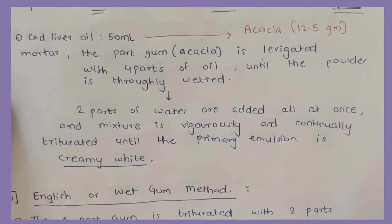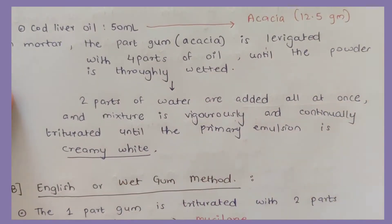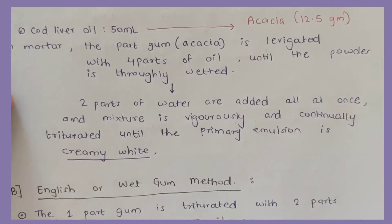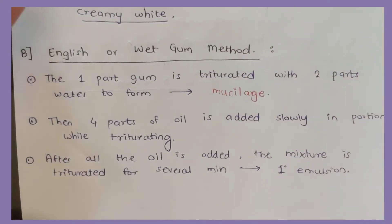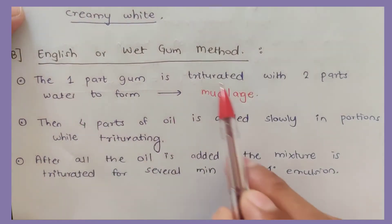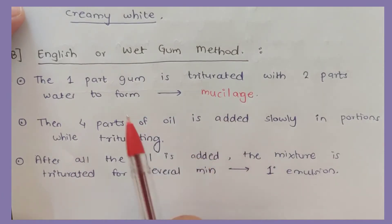In this case, one part of gum is triturated with two parts of water to form a mucilage. Initially, I have taken one part of gum and two parts of water to form a mucilage.